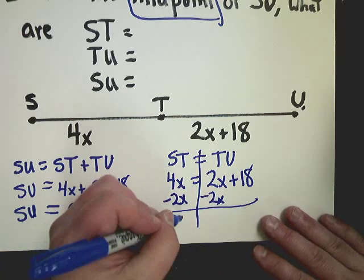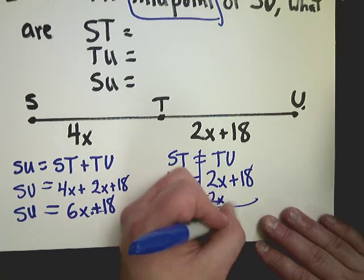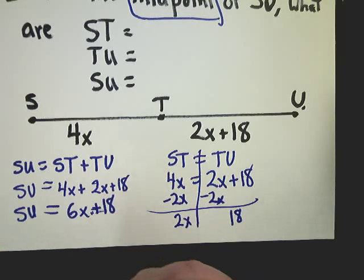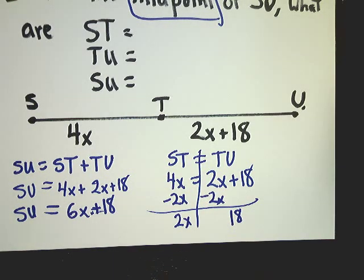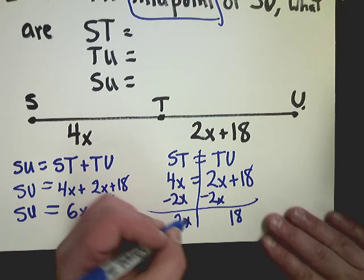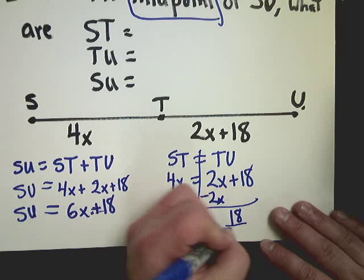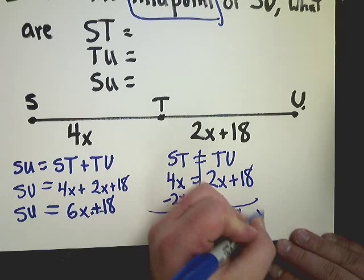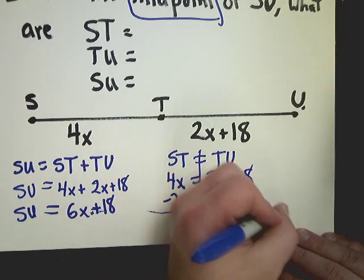Subtract 2x from both sides. And by the way, if you forgot how to do this, in the algebra section of the YouTube site, there should be some videos on how to solve equations with variables on both sides. Go there and check it out. It's pretty simple. Divide by 2. So, x is equal to 9.